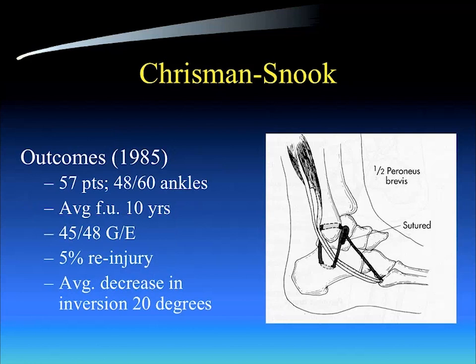Outcomes noted in 1985: a study of 57 patients with an average follow-up of 10 years. 45 of 48 had good or excellent results. 5% had a re-injury. There was an average decrease in inversion of approximately 20 degrees, as expected. You can see how it is routed from the front of the fibula back down to the calcaneus.